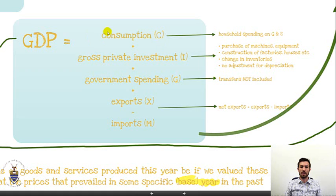So the GDP expenditures approach is: C plus I plus G plus X minus M.